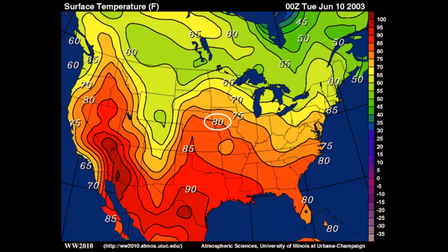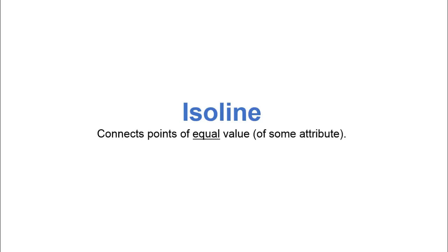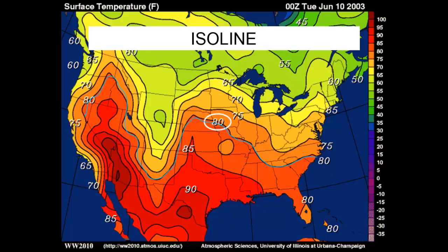Consider for example the line labeled 80. The places that lie on this particular line have a temperature of precisely 80 degrees Fahrenheit. This line labeled 80 is an example of an isoline. So what precisely is an isoline? Well, an isoline is just a line that connects points of equal value of some particular attribute. So in the example we just saw, the attribute of concern was temperature. In the case of temperature, there's actually a special name for the isoline — it's called an isotherm.